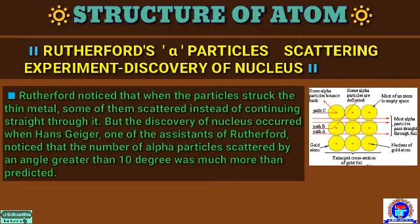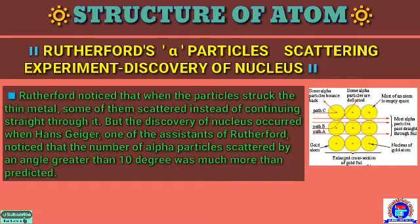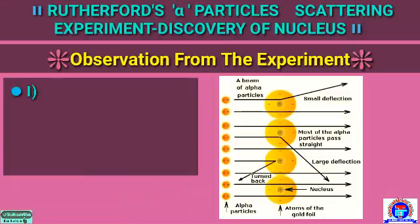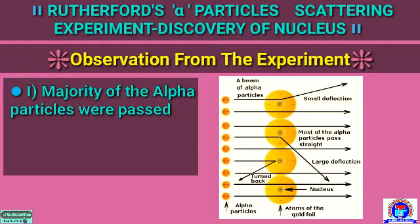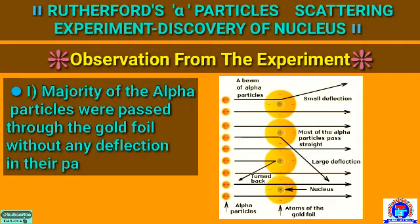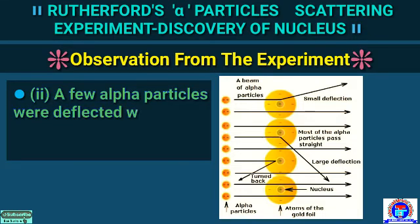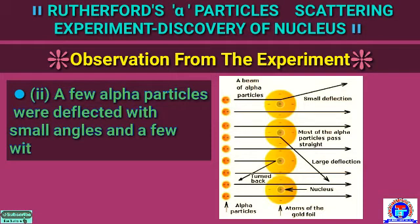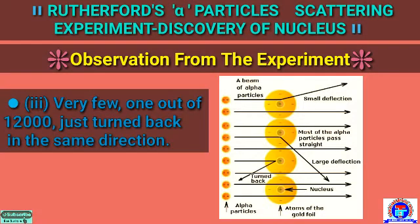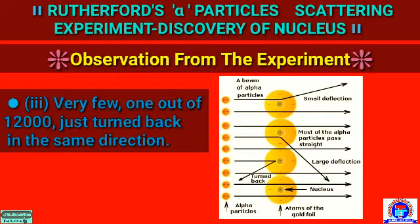What are the observations from this experiment? Number 1: the majority of the alpha particles passed through the gold foil without any deflection in their path. Number 2: a few alpha particles were deflected with small angles and a few with large angles. Number 3: very few — 1 out of 12,000 — just turned back in the same direction.